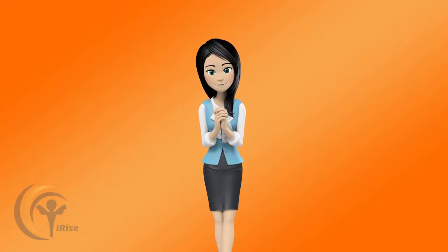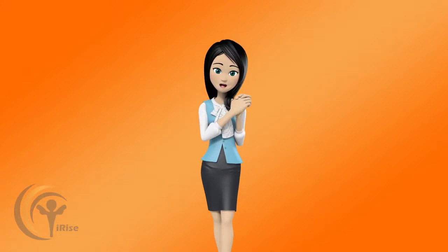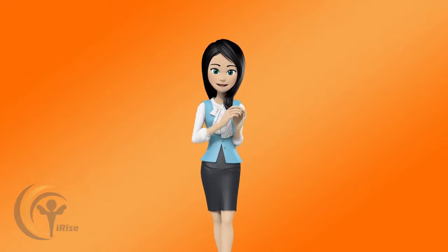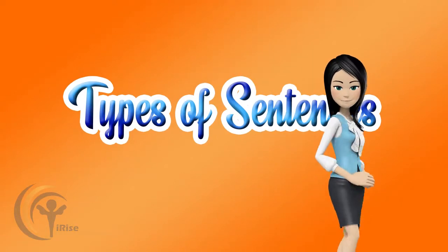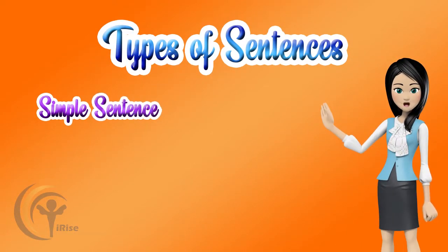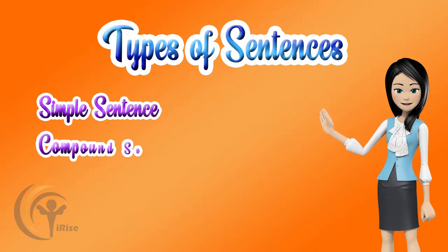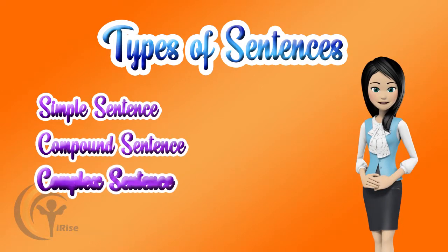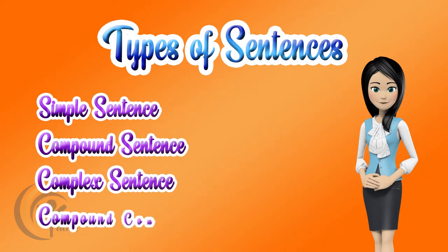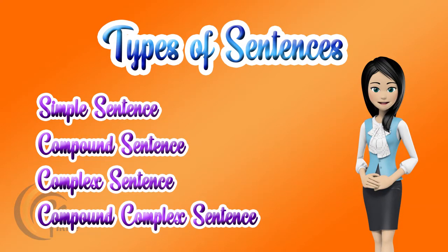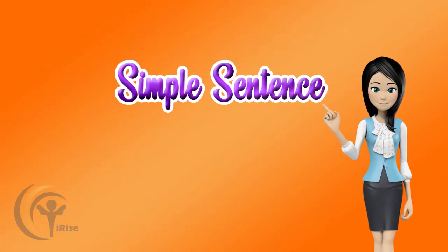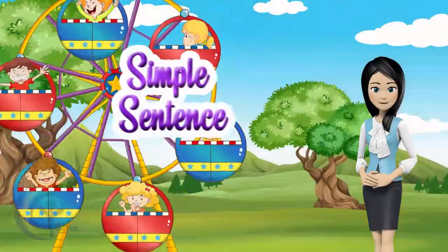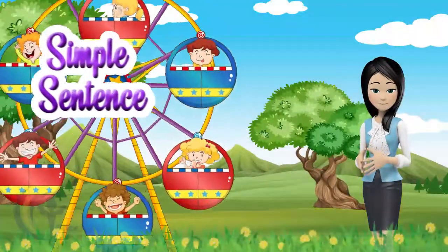Hello, our young and adult followers. Today we're going to talk about the types of sentences. We mainly have four types of sentences: the simple sentence, the compound sentence, the complex sentence, and finally the compound-complex sentence. In this video, our main concern is the simple sentence, which is the major component for all the other types of sentences.